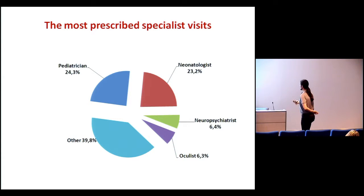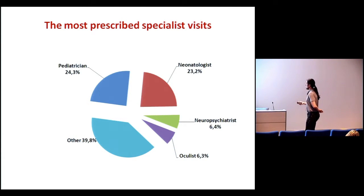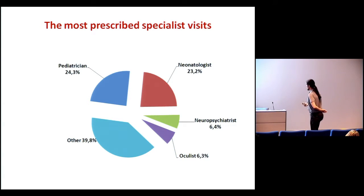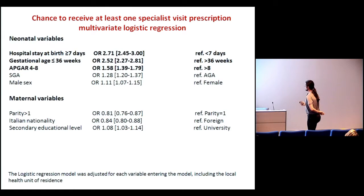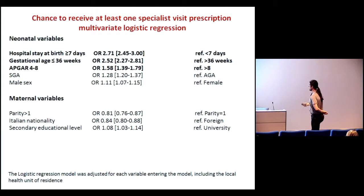If we look at specialist visits, infants were visited by pediatricians, neonatologists, neuropsychiatrists, and oculists. In this case, we have a completely different scenario: neonatal variables were those most associated with the chance to receive at least one specialist visit, while maternal variables did not play a major role.